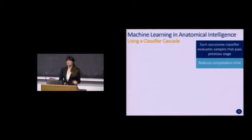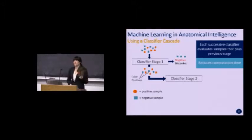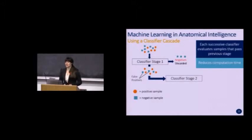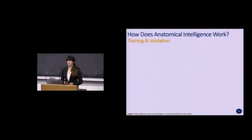The second classifier only analyzes images that made it through the first stage — not the initial inputs or the negatives discarded earlier — which is where you save computation time and reduce processing power. You can continue running this for as many stages as necessary to achieve a detection rate adequate for your intended application. Now let's look at how the actual process of anatomical intelligence works in an ultrasound system.